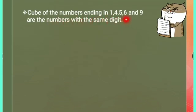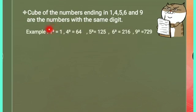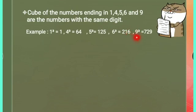The cubes of numbers ending in 1, 4, 5, 6, and 9 end in the same digit. For example: 1³ = 1, 4³ = 64 (ends in 4), 5³ = 125 (ends in 5), 6³ = 216 (ends in 6), and 9³ = 729 (ends in 9). So if a number ends in any of these digits, its cube will also end in the same digit.